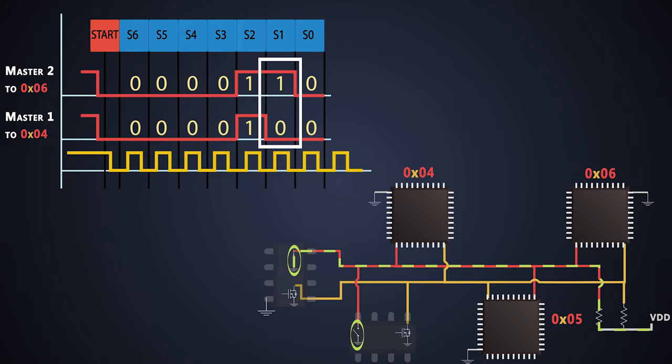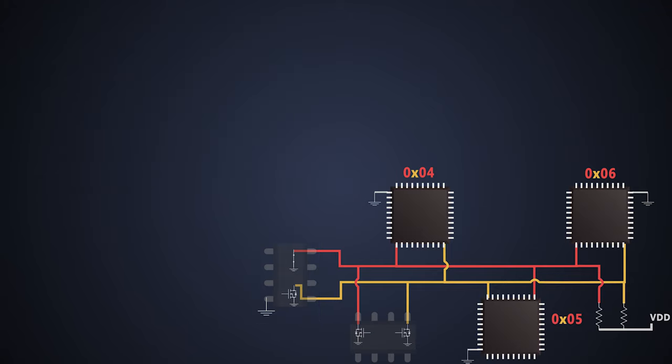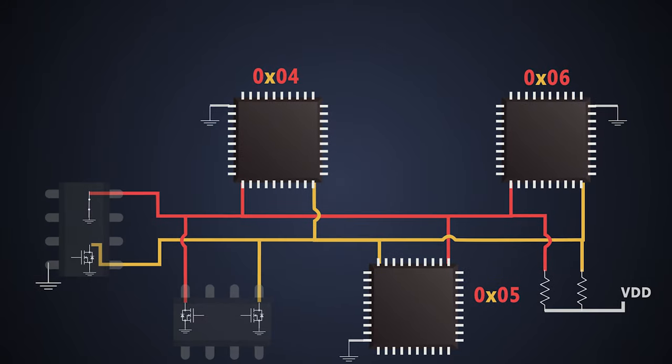Now, master 2 understands that even if I kept the SGL line high, it is showing low. That means some other device is accessing the bus at the same time. And that's how the slave who has low address gets higher priority, and master 2 stops sending the data. And this is the bus arbitration in the I2C communication protocol.